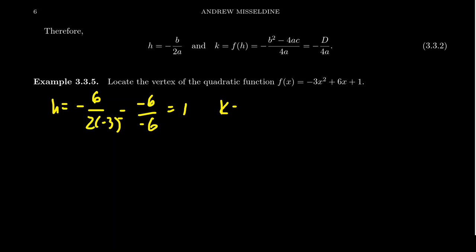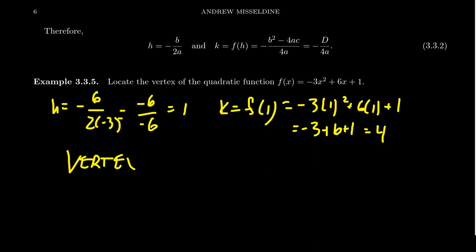Then to find k, we're just going to compute f(1). We evaluate the function at 1. That'll give you the corresponding k coordinate. That's -3(1)² + 6(1) + 1. That'll be -3 + 6 + 1. 6 take away 3 is 3 plus 1 is 4. So we see that the vertex here, which is h comma k, will be (1, 4). And we can find that point without having to complete the square.